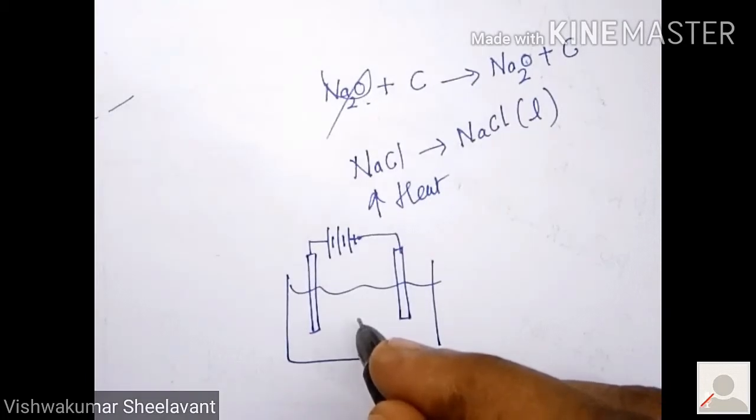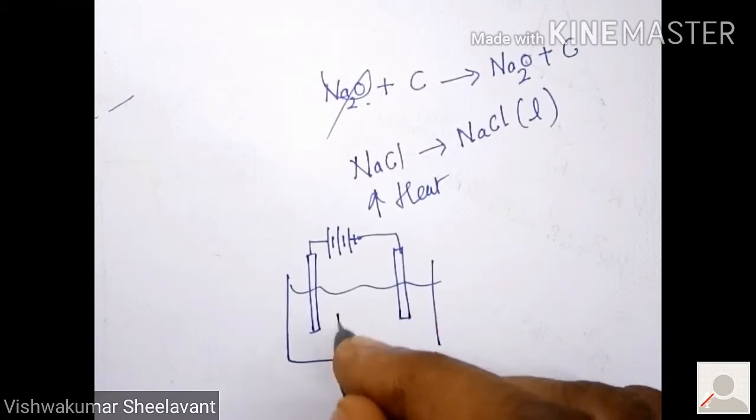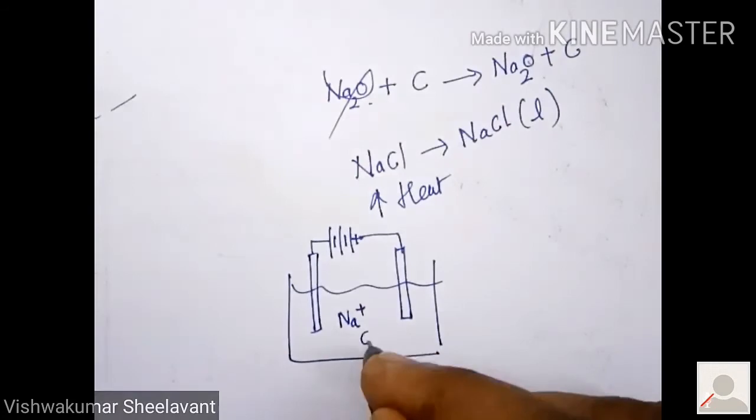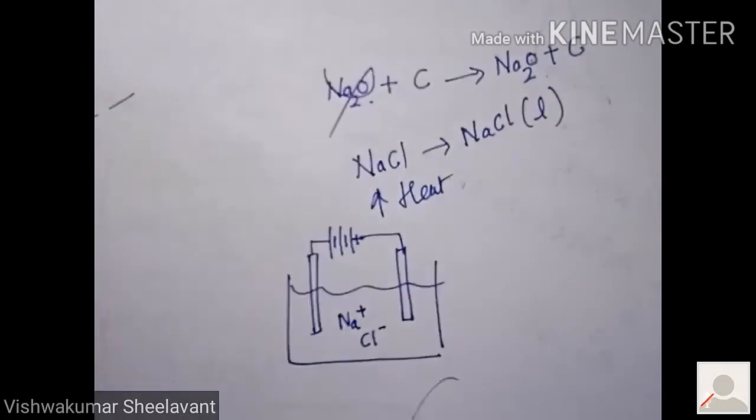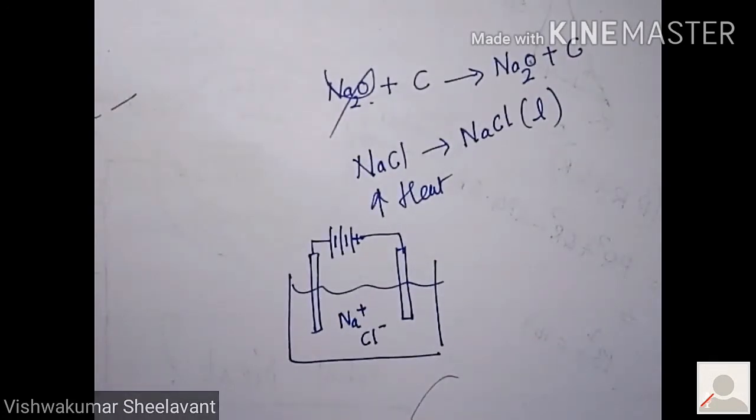In the molten state, as we have already discussed, electrostatic force of attraction will have overcome. They will have been separated. Na and Cl will have been separated. In the molten state, we will be having Na+ and Cl-. In ionic compounds, we have studied that.